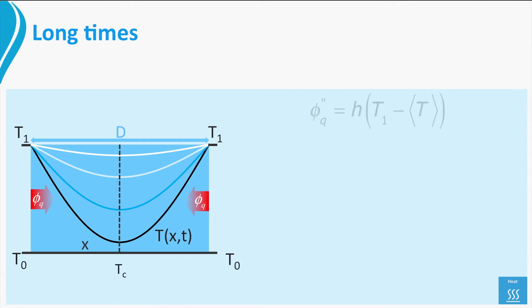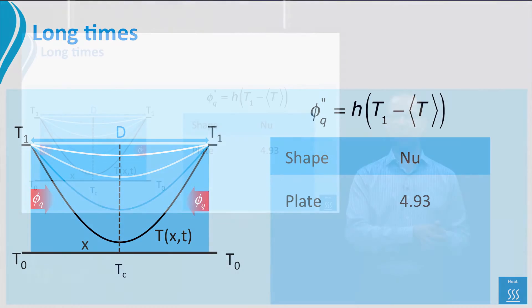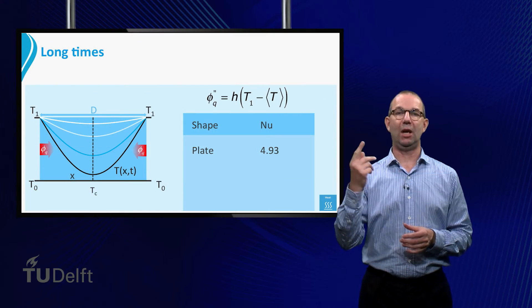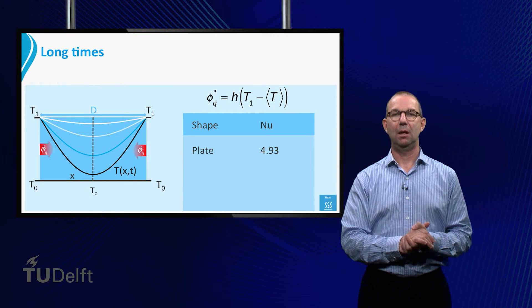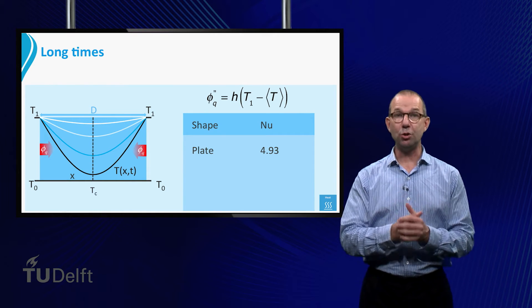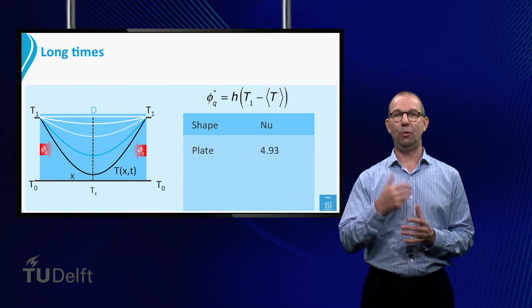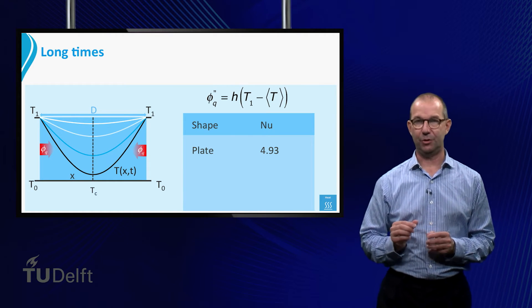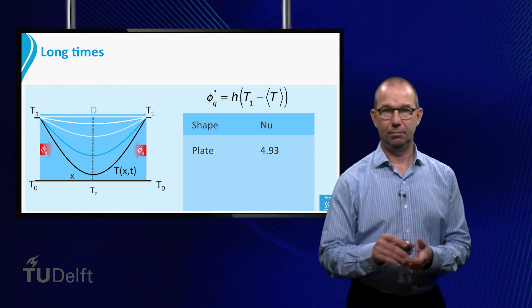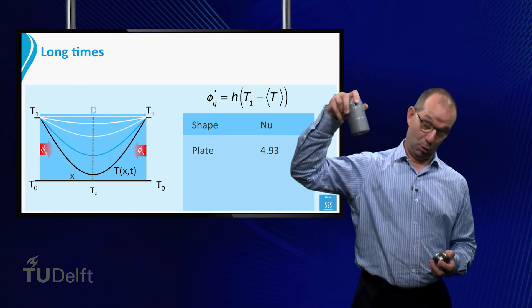Let's go back to the long times. We have seen that for a plate the heat transfer coefficient became a constant after long enough time. We could write this as Nusselt is 4.93. H becomes also a constant for objects of other shapes. Two of them are particularly relevant: the sphere and a long cylinder.